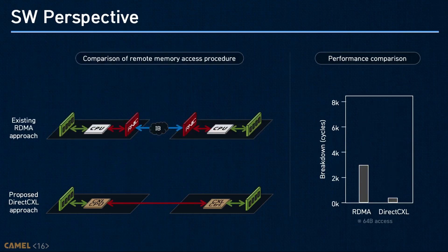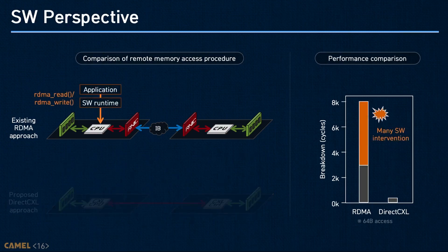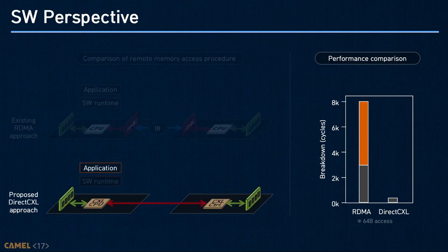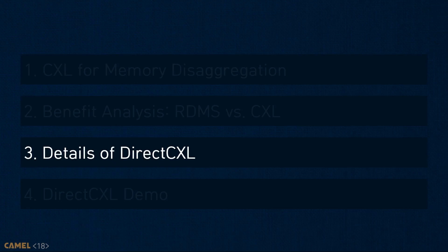From the software viewpoint, RDMA requires additional software intervention. When an application calls an RDMA function, user-level RDMA libraries must be involved to control the RNIC. In contrast, CXL does not introduce any software overhead, as it accesses remote memory using load/store instructions. As a result, the performance benefit is increased to about 24 times.